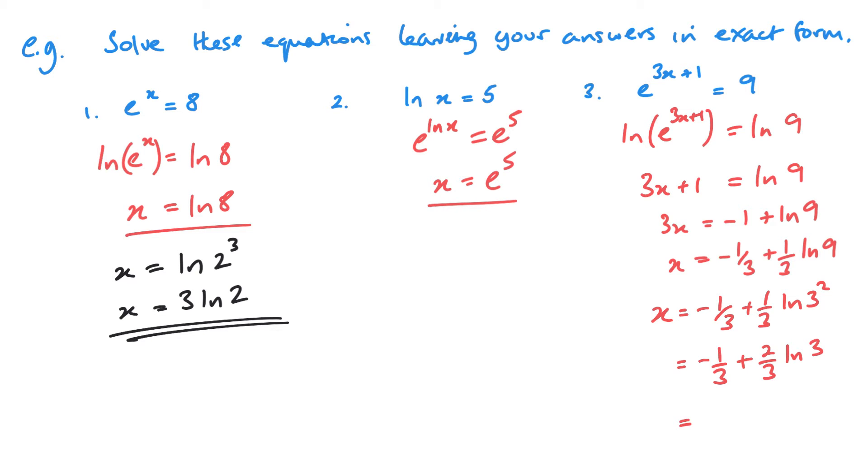Alternatively, this could be written as minus 1 plus ln 3 over 3, or ln 3 minus 1 over 3. But I do like to close that bracket off to show that the minus 1 is not part of the log.